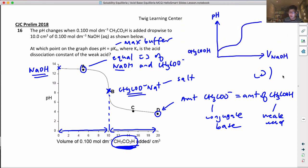So if the question was in the reverse - you started with ethanoic acid in the beginning and they added sodium hydroxide - where is the buffer in this case?